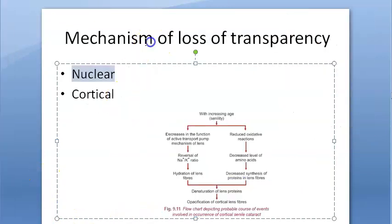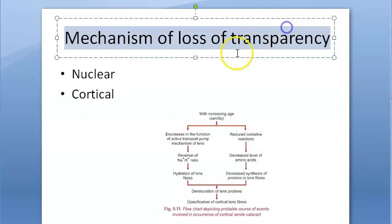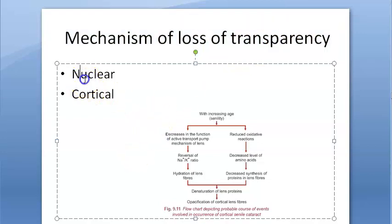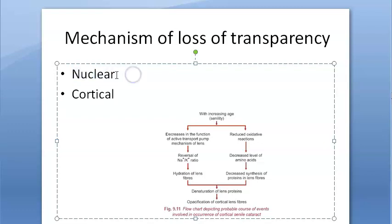Smoking is also blamed as a cause. Some additional factors are noted that can cause cataract to occur much earlier than expected. Now, why does the transparency of the lens get lost — why is it becoming opaque? In nuclear senile cataract, there are degenerative changes: nuclear sclerosis, dehydration, and compaction, which is why it becomes a hard cataract. There will be a lot of water-insoluble proteins in the nucleus.